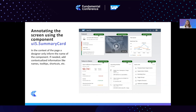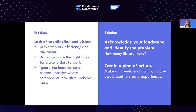What's the problem we are bringing today? There is a lack of coordination and vision when working with libraries, because that prevents work efficiency and alignment. It does not provide the right tools for stakeholders — mainly designers and developers — to work with, and it ignores the importance of trusted libraries where components look alike. The solution we propose starts with acknowledging the landscape we work with: every product has a different landscape, every product has a different type of problem to solve.